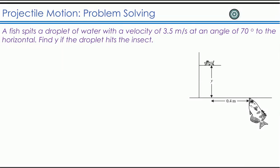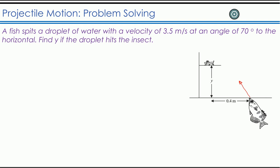Let's start with a problem-solving technique in two-dimensional motion. A fish spits a droplet of water with a given velocity at some angle to the horizontal, and you are asked to find the vertical distance y. This problem explains how to use the concept of motion in two dimensions. The initial velocity is given as 3.5 meters per second at an angle of 70 degrees with the horizontal.